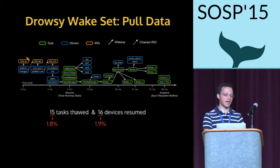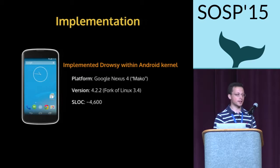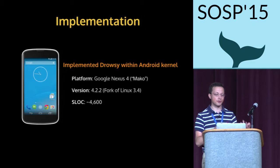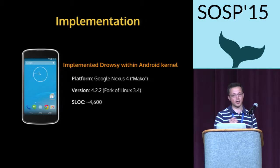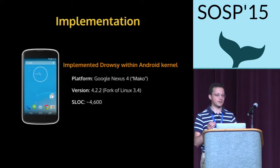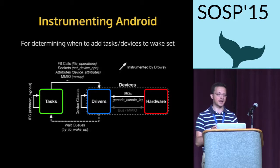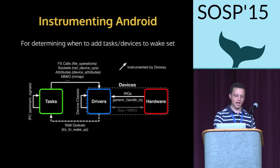Given the design of Drowsy, we implemented it within the Android kernel. For hardware, we used the Google Nexus 4, which generated the power traces seen earlier, and this corresponded to roughly 4,600 lines of code added or modified in the kernel. A key challenge is that Android is a full-fledged Linux-based kernel, and we have to figure out exactly what to instrument to determine when to add tasks and devices into the wake set. More details are in the paper, and our source code is publicly available.